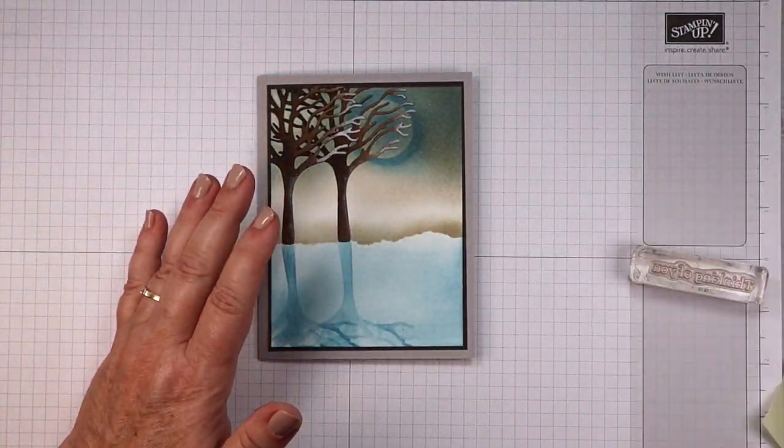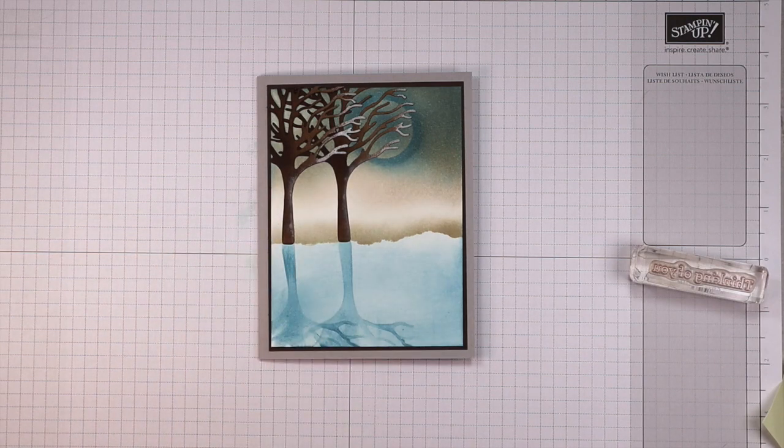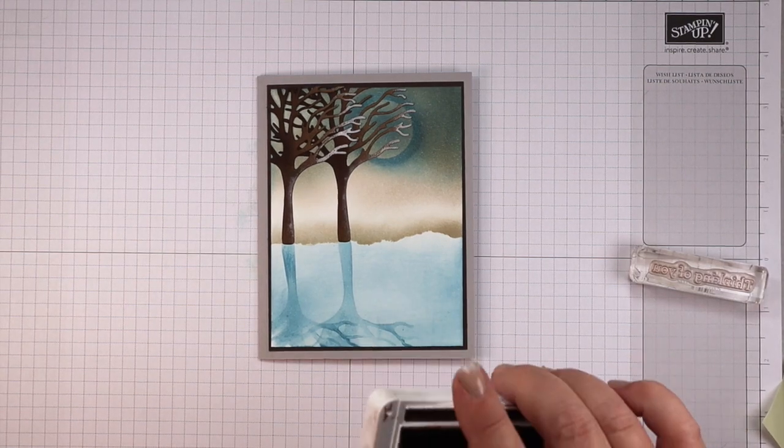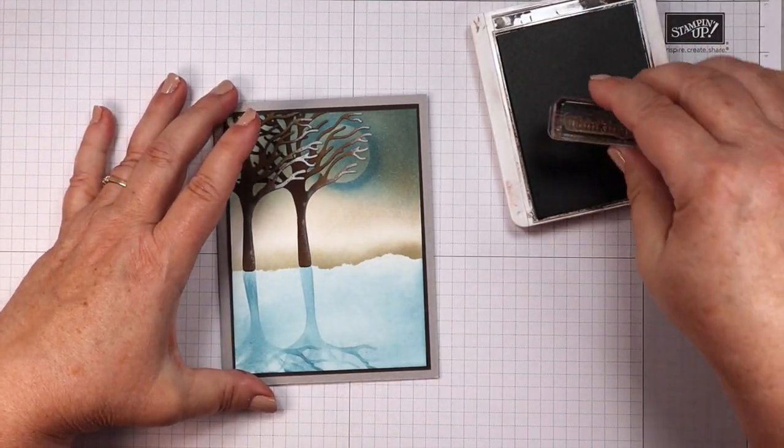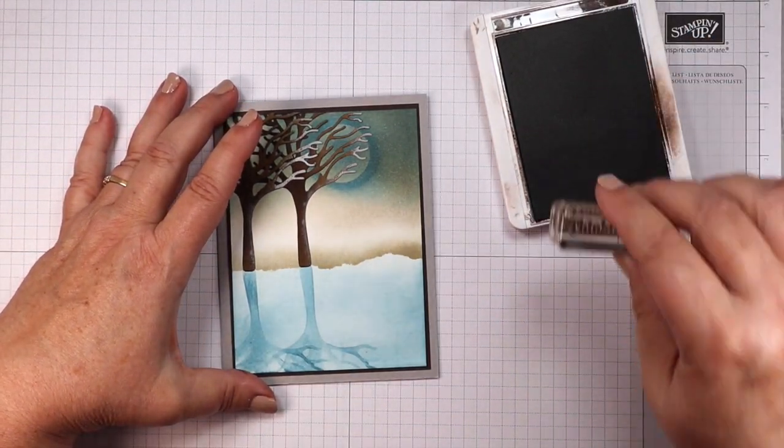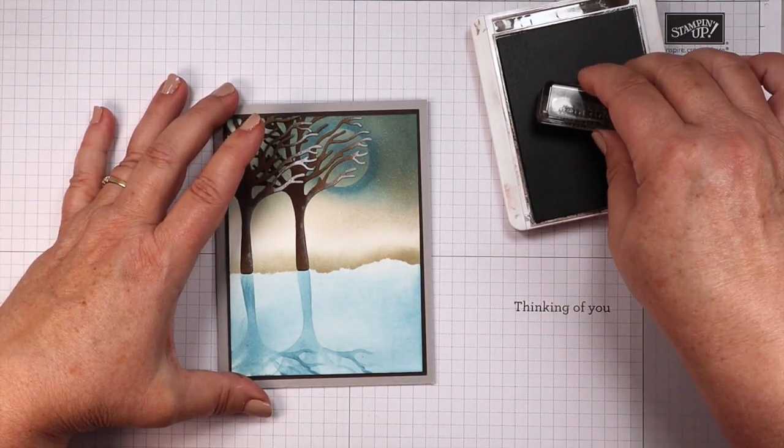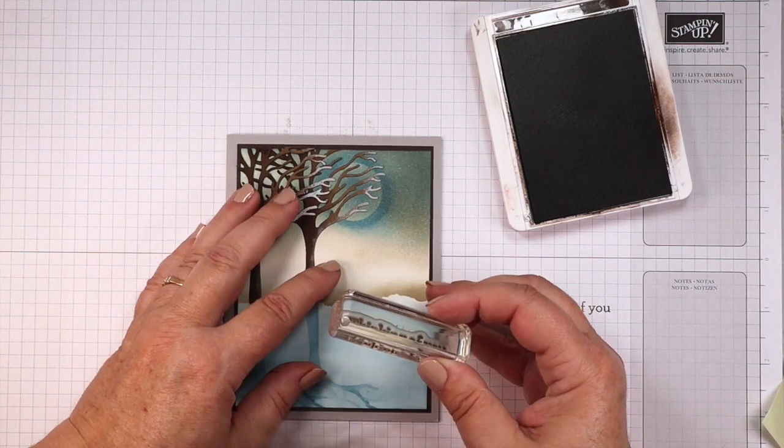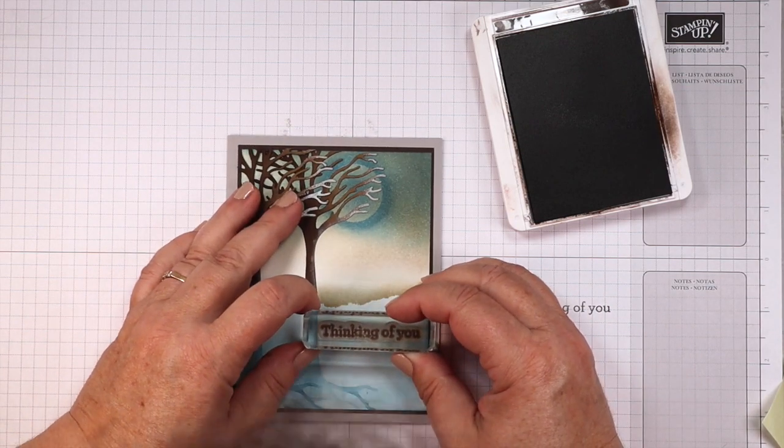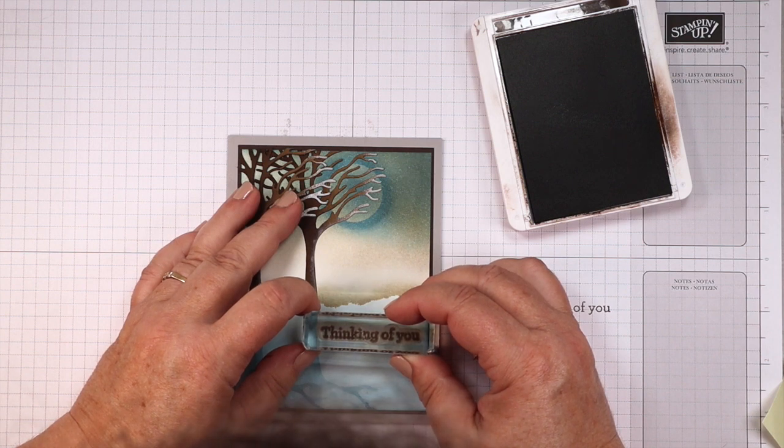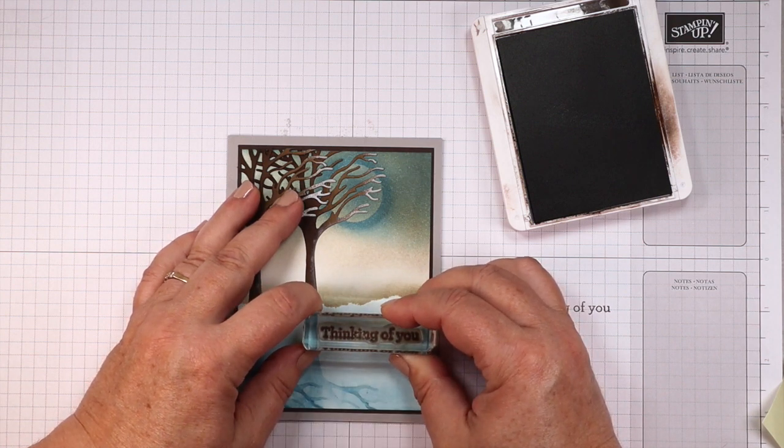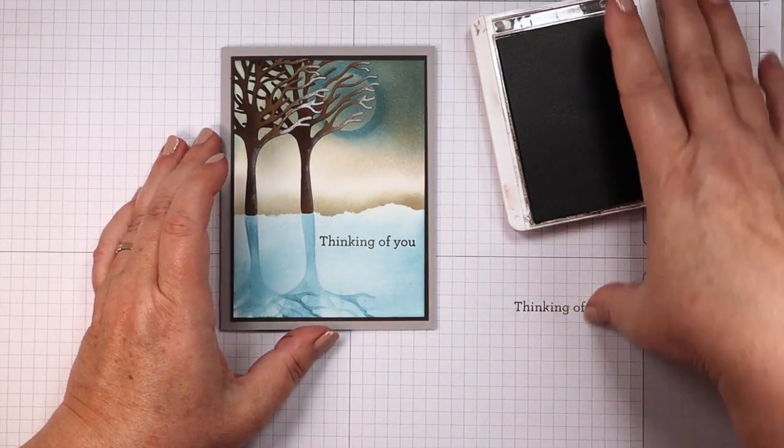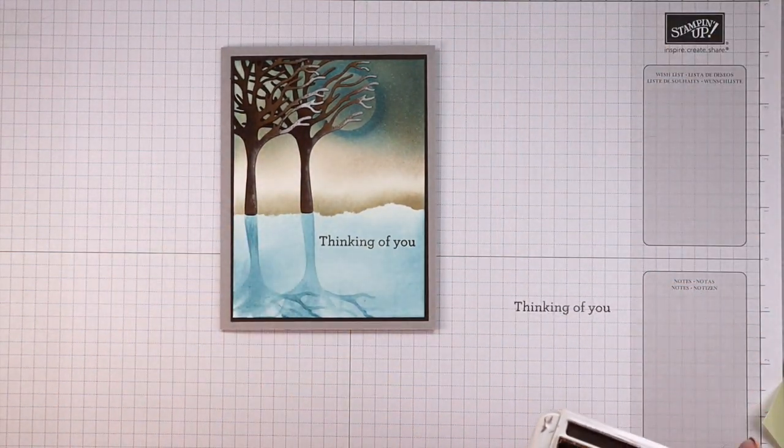All right, now we need a sentiment. I probably should have done that before I put it on the card, but I forgot. I'm only human, right? So here we go. Test my stamp, make sure it's stamping the way I want to. See if I can get this kind of straight on here. It's always hard doing it on a video. There we go, not too shabby. I'll take it.